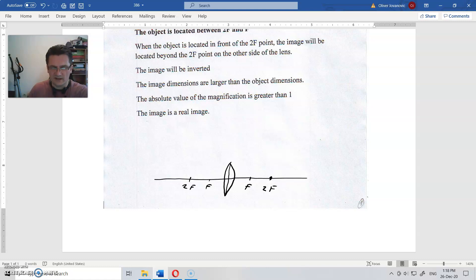It means that rays that come parallel to the optic axis, this is the optic axis, will converge toward the focal point, like this.